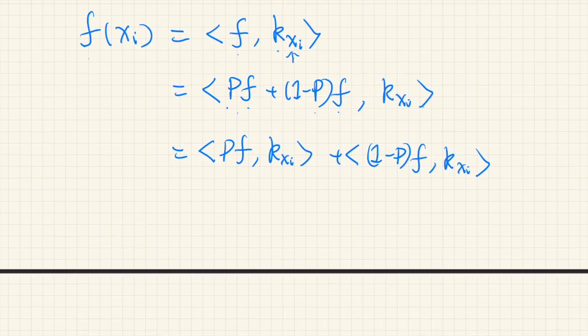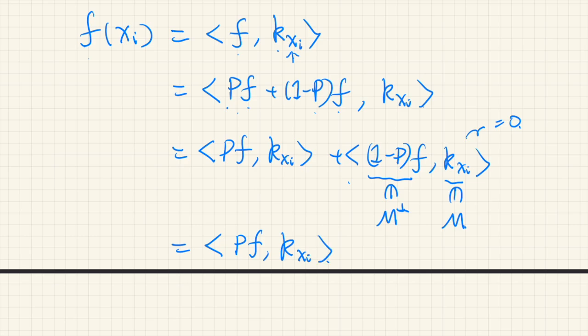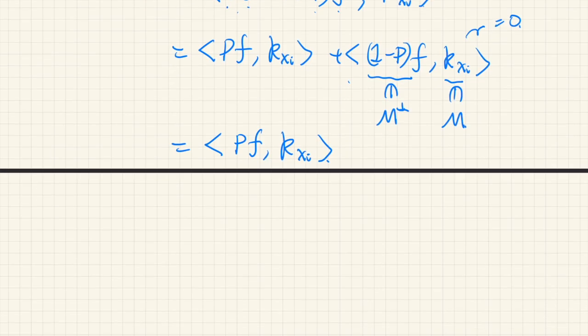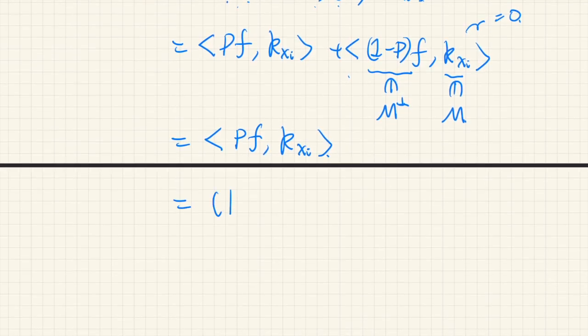Anyway, so we can distribute this to Pf·kxi and (1-P)f·kxi. Now, this part, this is an element of the orthogonal complement of M, and this is an element of M, obviously. So, this inner product should be equal to 0. Therefore, this is equal to Pf·kxi.